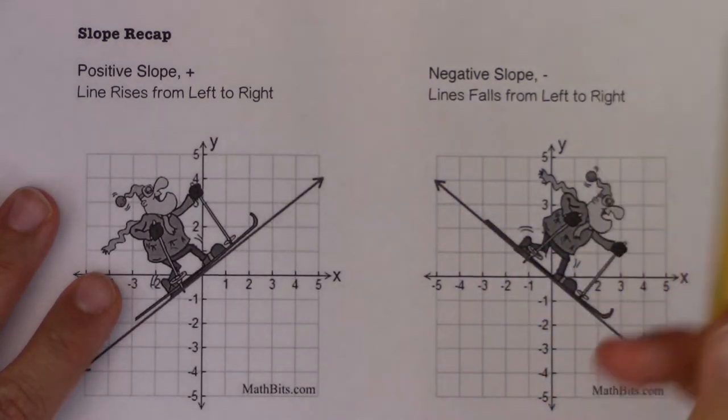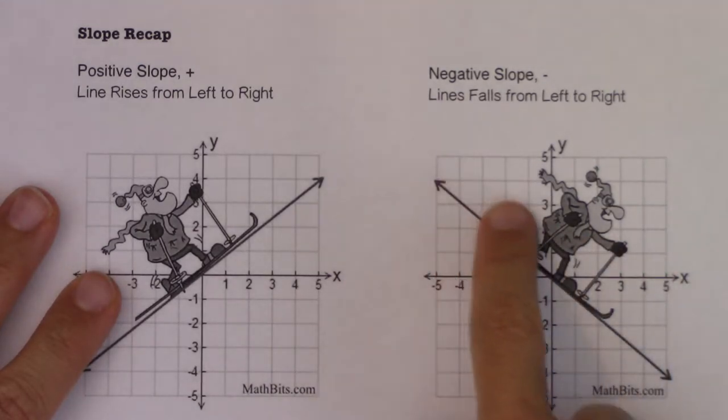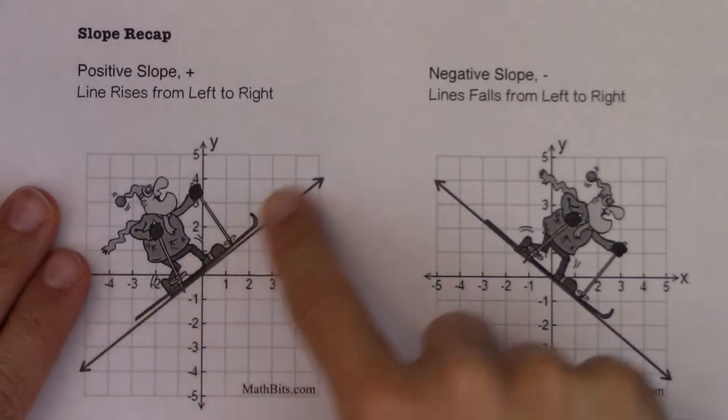And we always talk about moving from left to right because on the x-axis that's low to high. So as I move left to right in the x-axis, you can see my y's fall there, my y's get lower and lower, or here they get higher and higher.